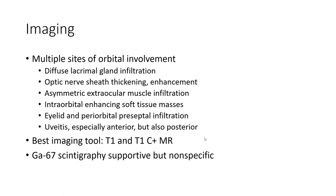multiple imaging features of Orbital Sarcoidosis include: optic nerve sheathing, enhancement, asymmetric extra-ocular muscle infiltration, intra-orbital enhancing lesions, nodularity, and peri-orbital pre-septal involvement.